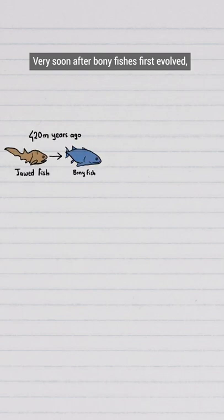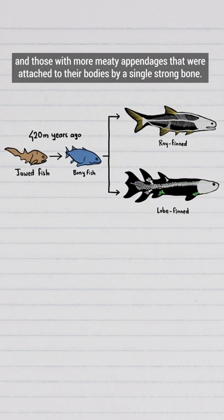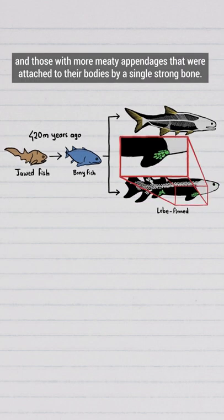Very soon after bony fishes first evolved, they branched into two groups: those with flimsy ray-type fins and those with more meaty appendages that were attached to their bodies by a single strong bone.